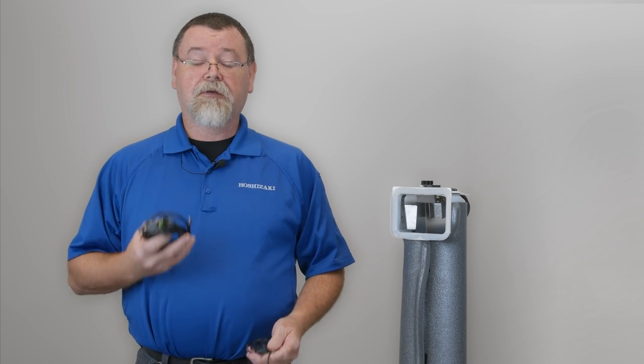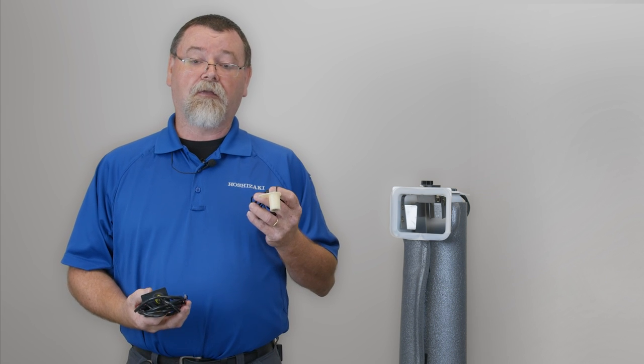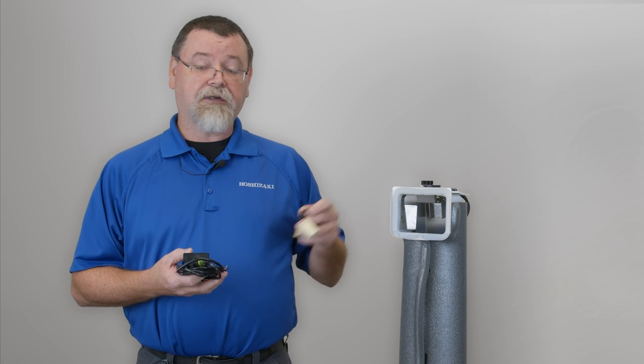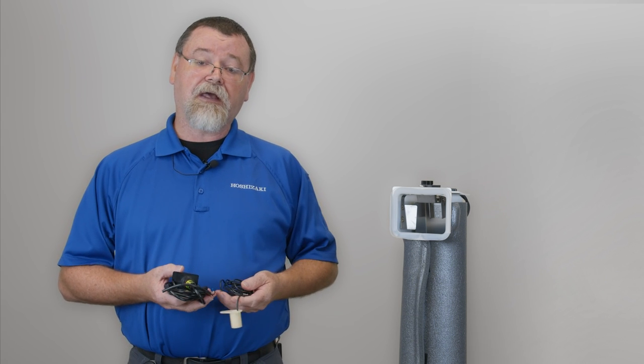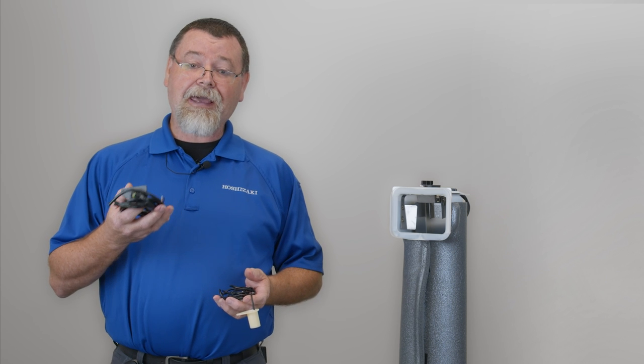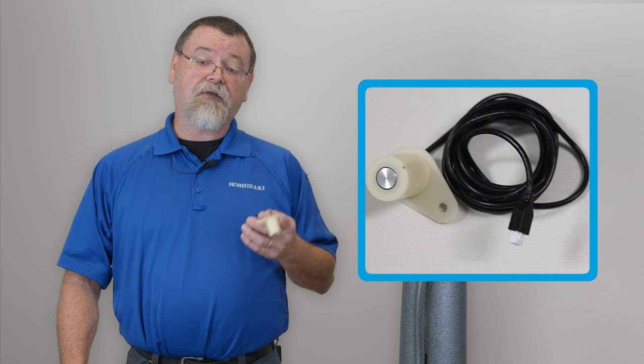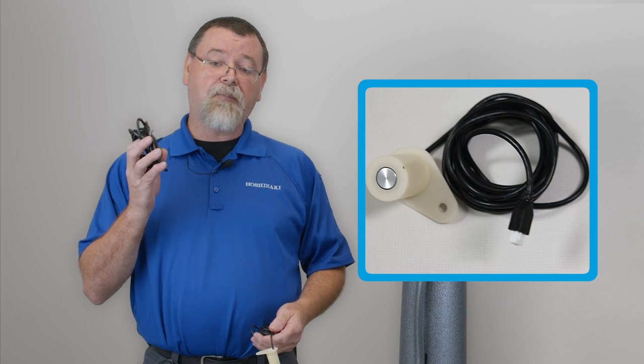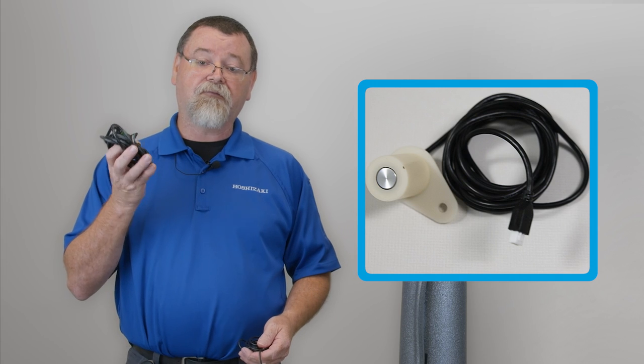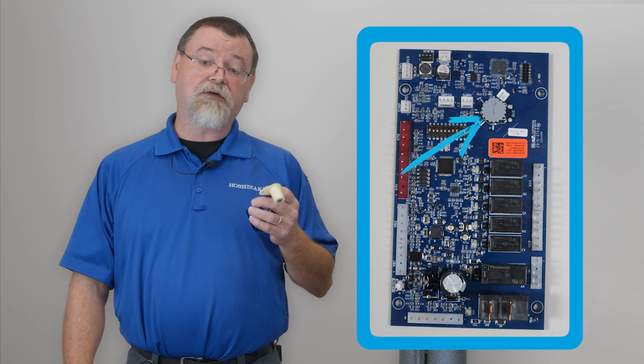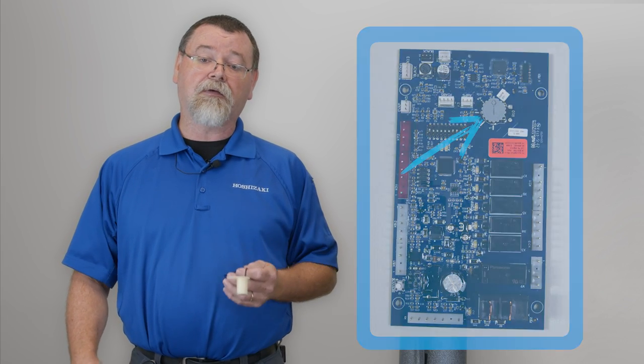So when we transition from the infrared to the ultrasonic on the modular Flakers, they work a little bit differently, but they both still work in conjunction with the proximity switch on top of the ice chute. Where the infrared uses light to activate the bin control, the ultrasonic uses sound. One other thing to note, the shutoff points on the infrared are not adjustable. The shutoff points on the ultrasonic are adjustable using a dial on the control board.